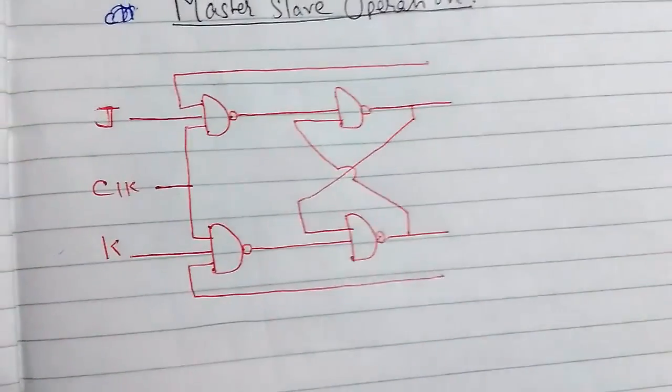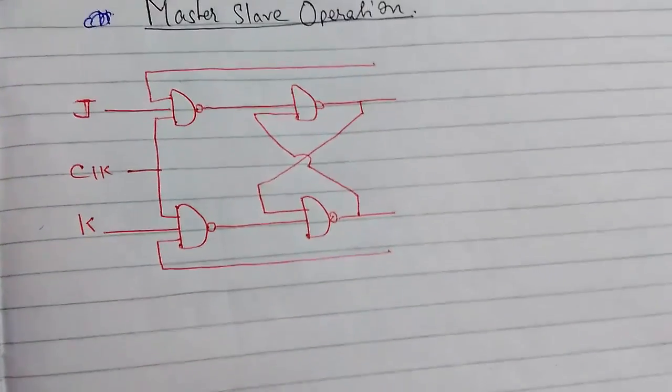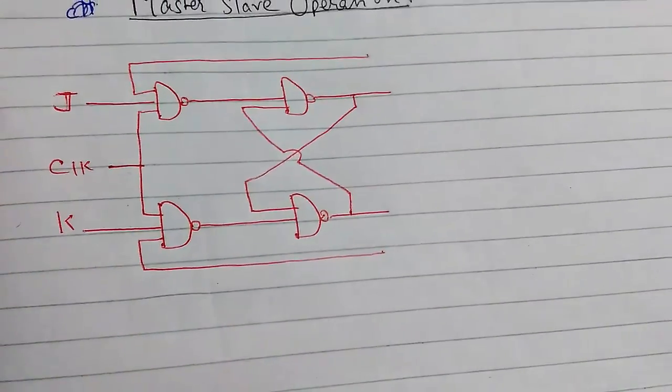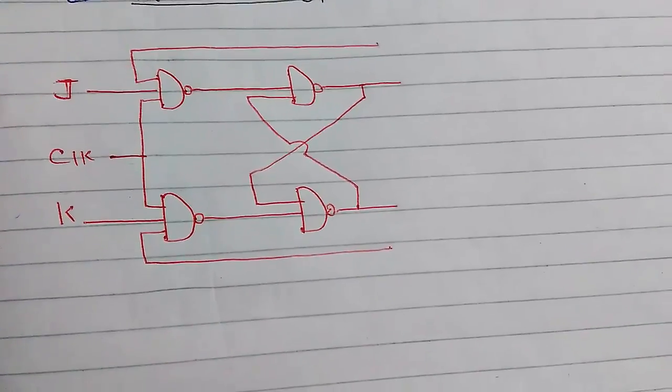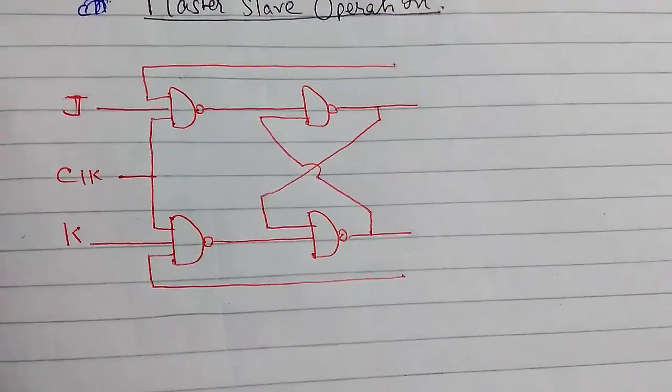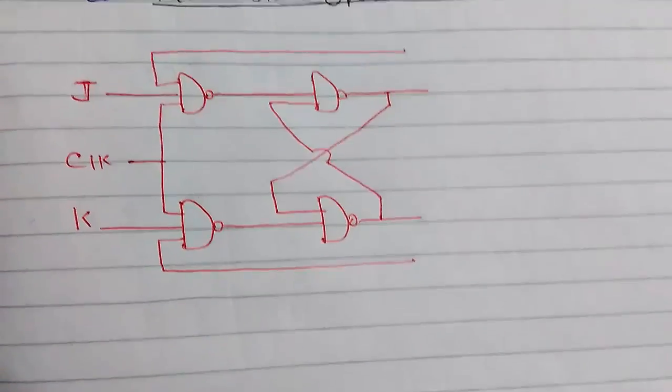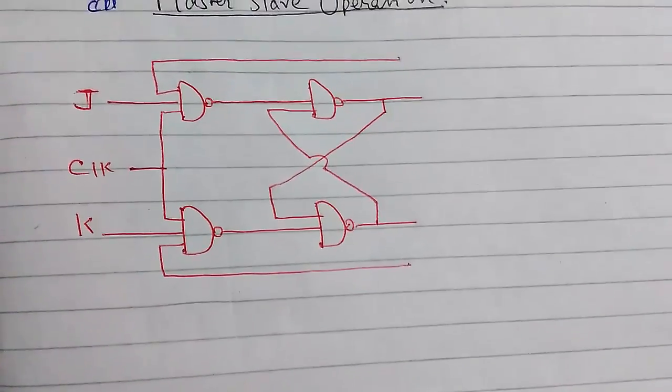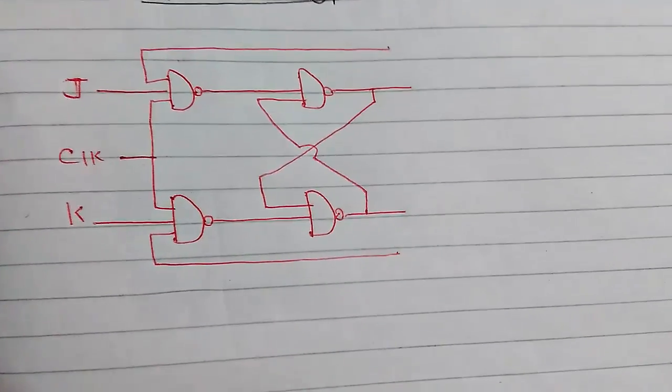We need to introduce some changes in our circuit to avoid the racing around condition. We need to bring the toggling. The difference between racing and toggling is that racing is like continuous change from high to low without our control. This is uncontrollable, and toggling refers to when we can control when we want zero and when we want one. That is the main difference.